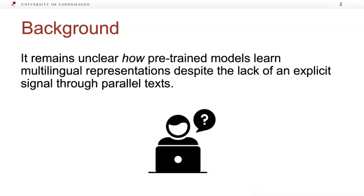Contextual representations have brought about impressive performance improvements in a wide range of NLP tasks. However, it remains unclear how pre-trained models manage to learn multilingual representations despite the lack of an explicit signal through parallel texts.